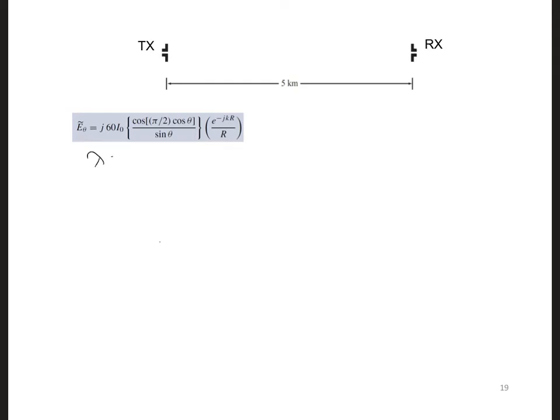For this problem, since lambda is equal to 6 meters at 50 megahertz, the receiver is easily in the far field of the transmitting antenna.